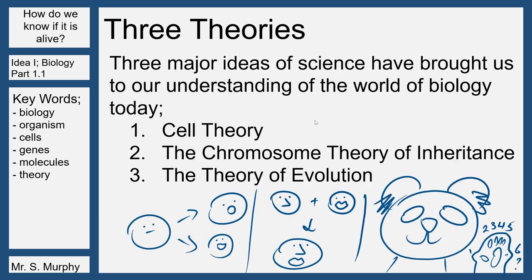These three major ideas in science have brought us to our understanding of biology today. The first is cell theory — all living things are made up of cells, and all cells come from preexisting cells. The second is the chromosome theory of inheritance — you are passing down genetic information and it changes a little bit over time. And the third is the theory of evolution — organisms changing over time and adapting to their environment, or not surviving.